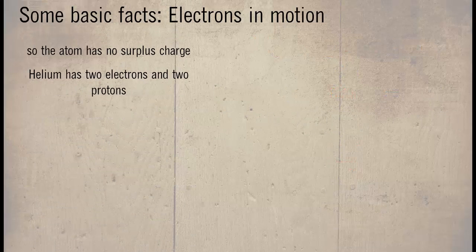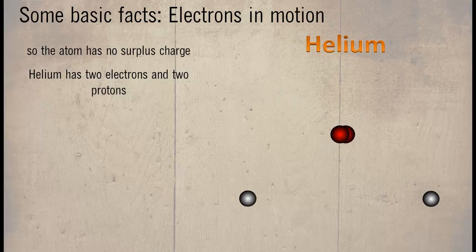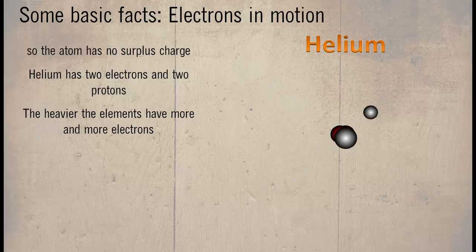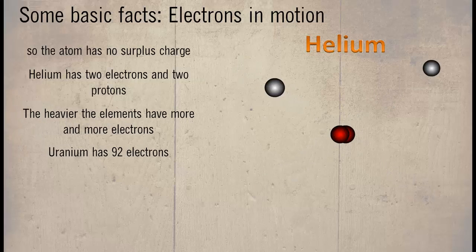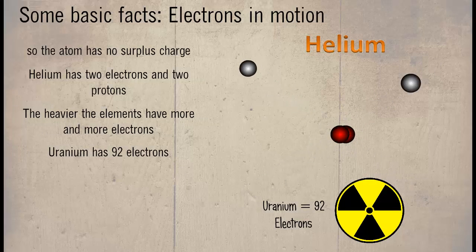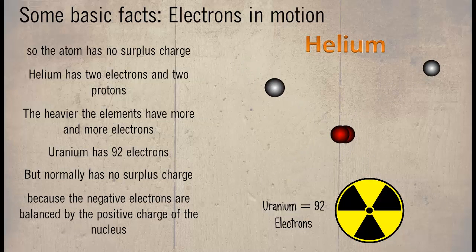Helium has two electrons and two protons. The heavier elements have more and more electrons. Uranium has 92 electrons, but normally has no surplus charge, because the negative electrons are balanced by the positive charge of the nucleus.